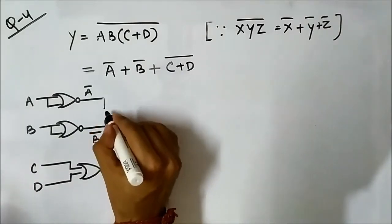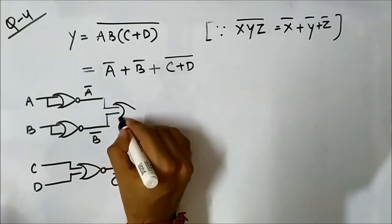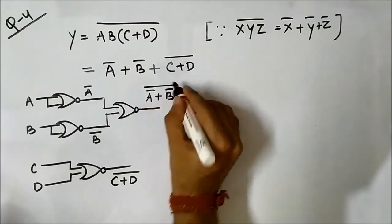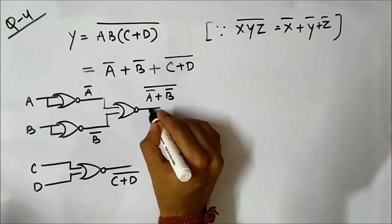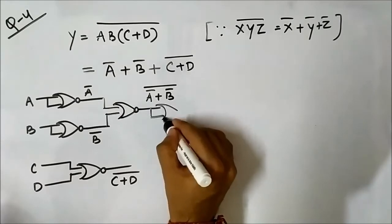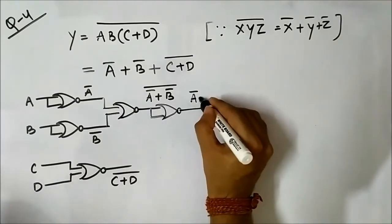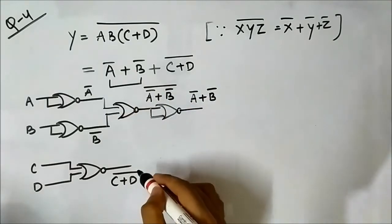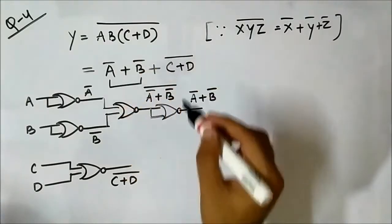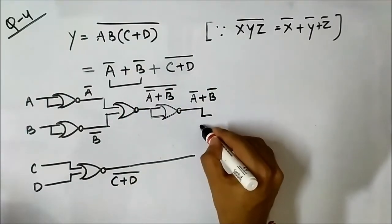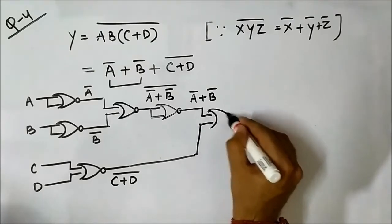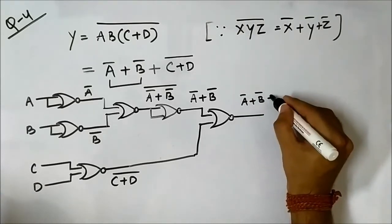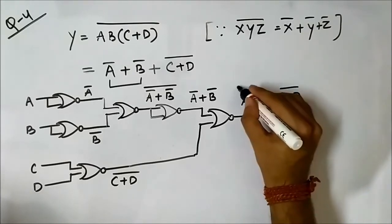So what we have to do is pass A complement and B complement through a two-input NOR gate, which gives us (A complement OR B complement) whole complement. Then we pass that through another NOR gate to get A complement OR B complement. Now we have this portion, this portion, and this portion, and we pass them all together through a NOR gate.